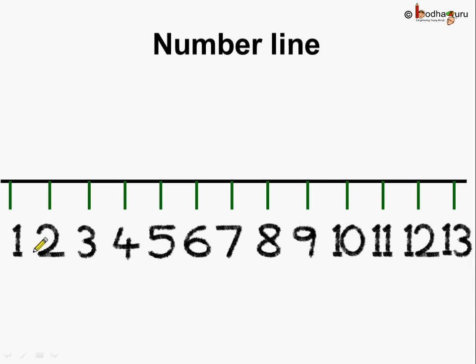All the numbers are at equal distance and starting from 1, 2, 3, 4, 5, 6, 7, 8, 9, 10, 11, 12, 13 and so on. A number line can extend to any number.